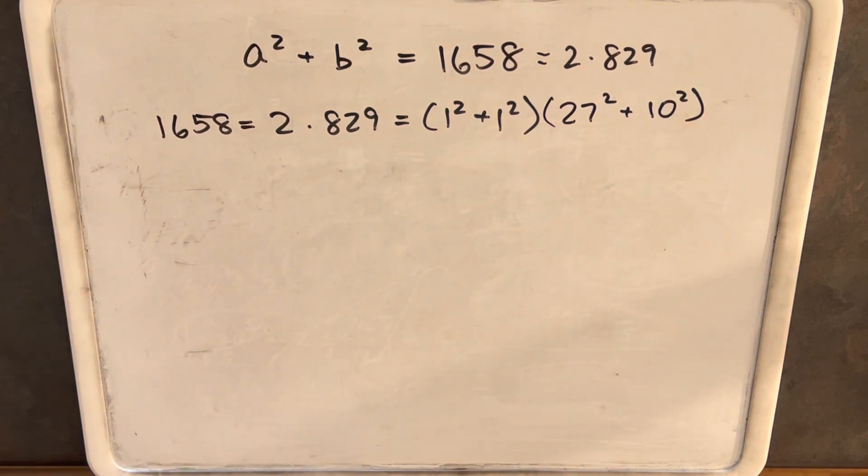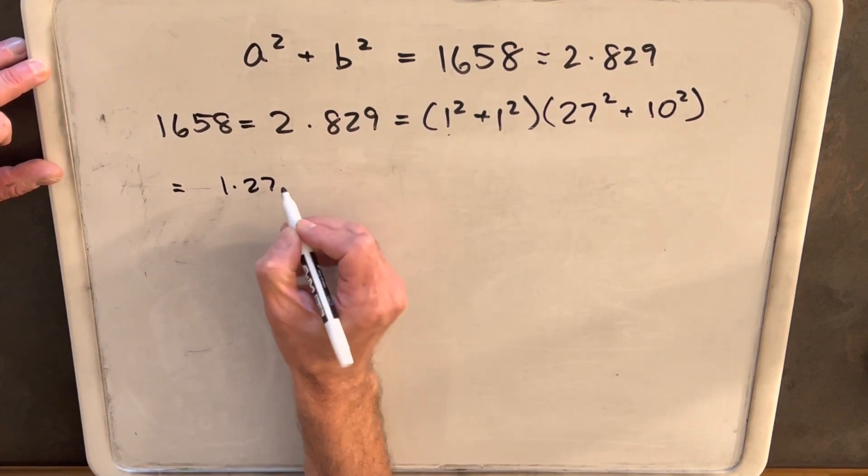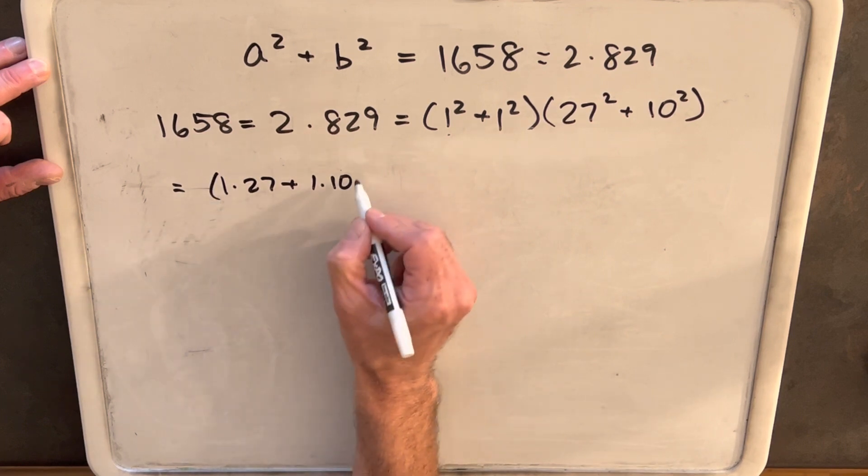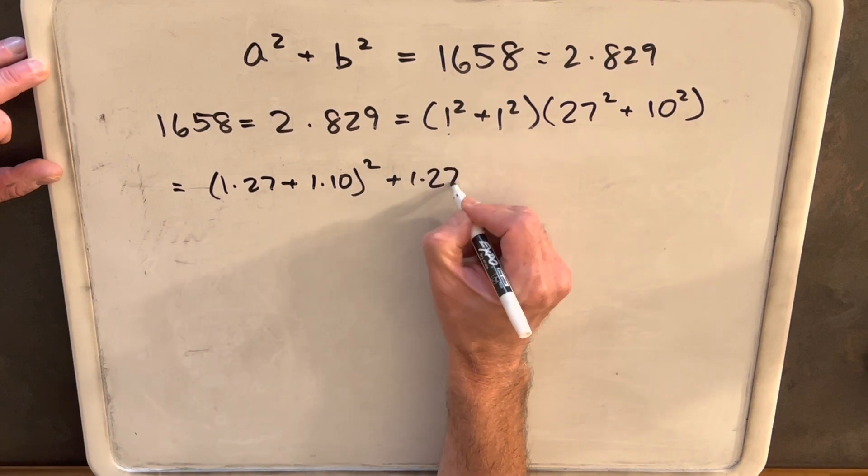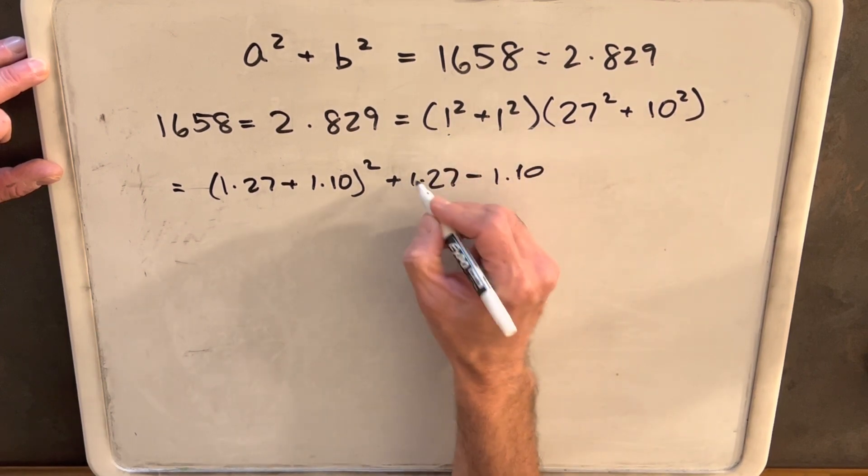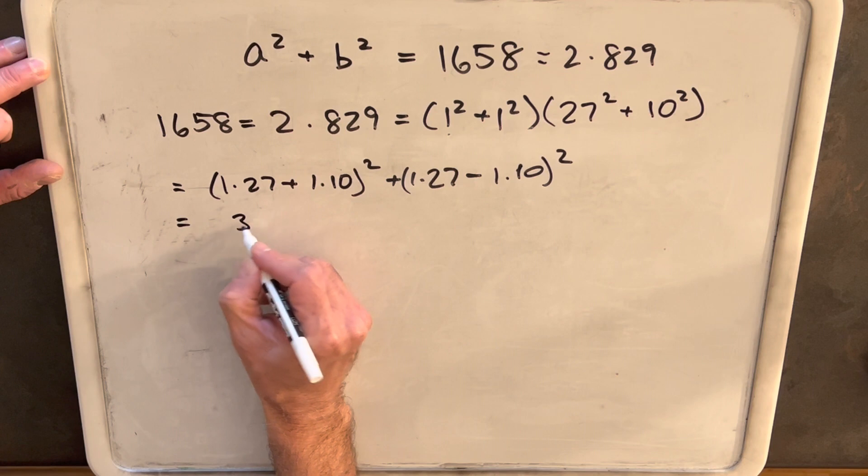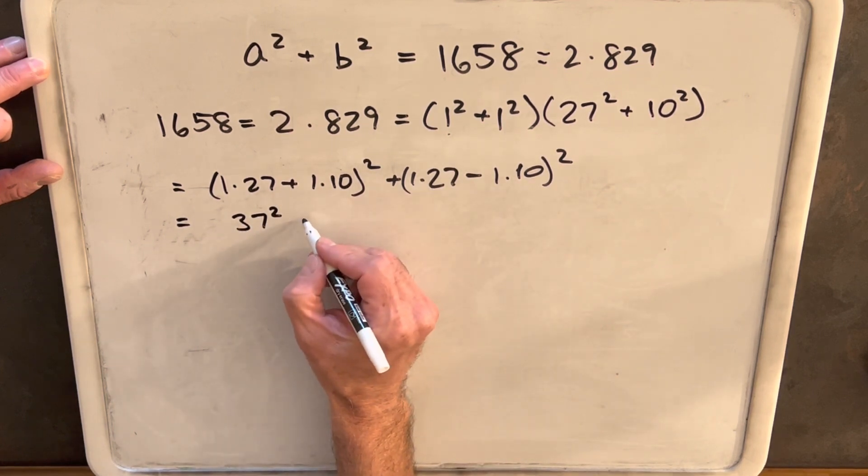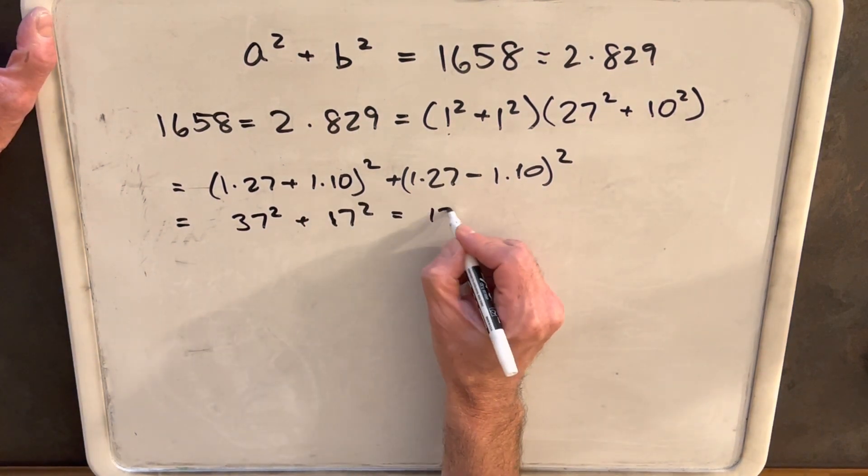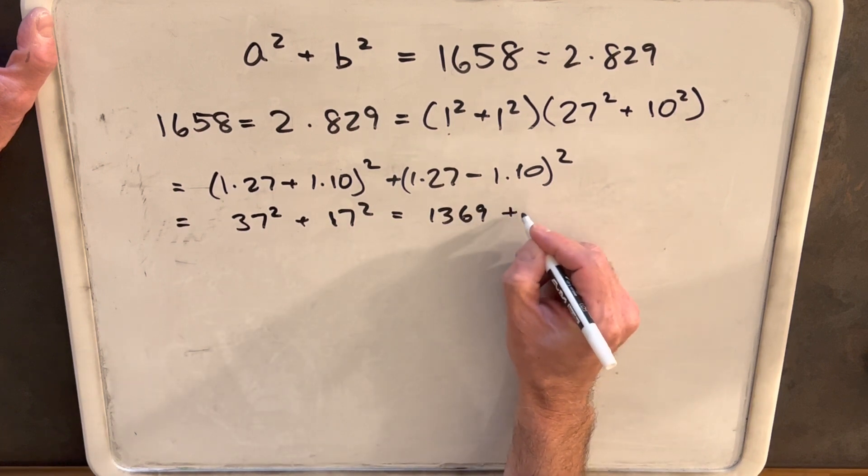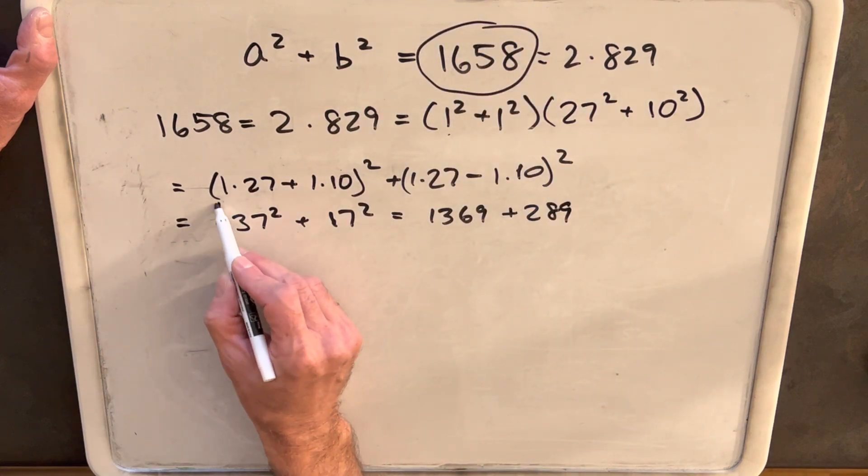Then we have this identity that allows us to basically distribute and rewrite this value. So we can rewrite this as (1×27 + 1×10)² + (1×27 - 1×10)². If we simplify that, this is just (27 + 10)², which is 37², and then (27 - 10)², which is 17². But if you actually multiply that out, 37² is 1369, 17² is 289. Adding those together gets us back to 1658. So this is our answer right here.